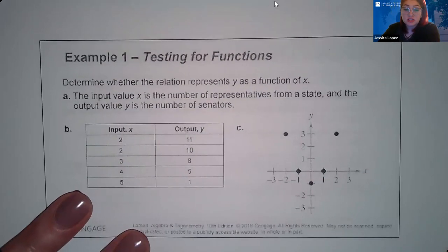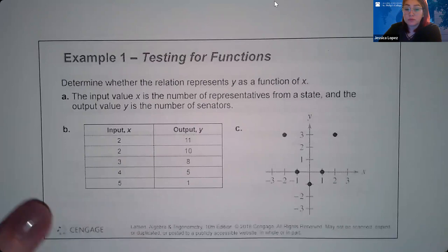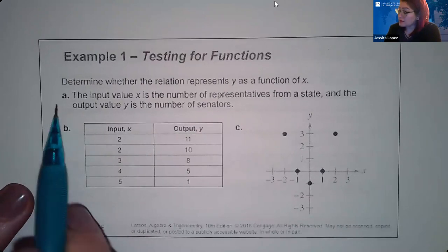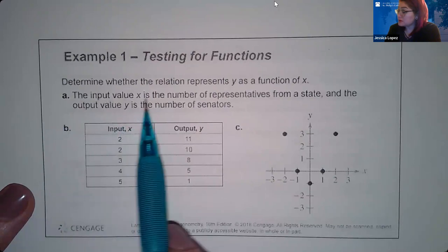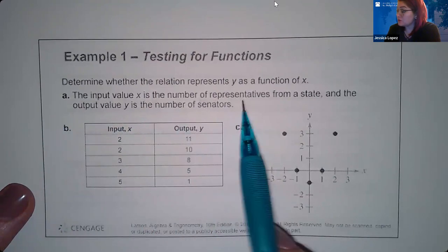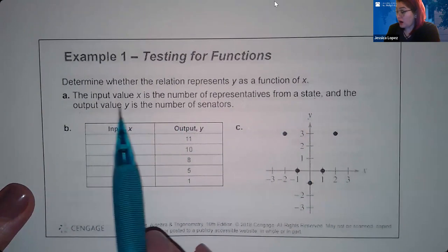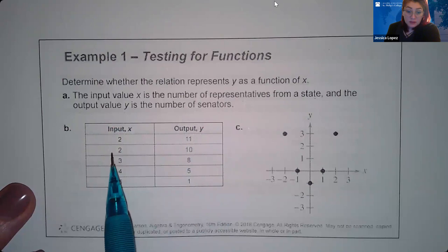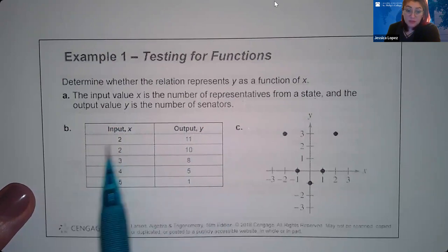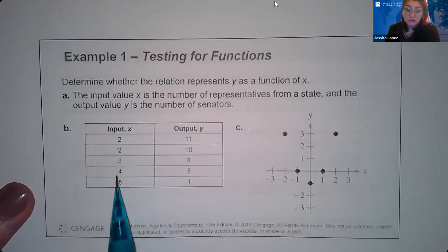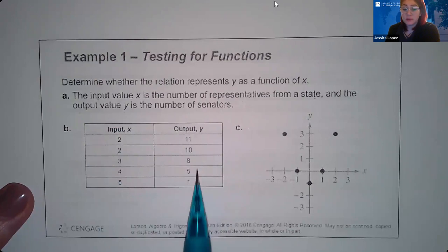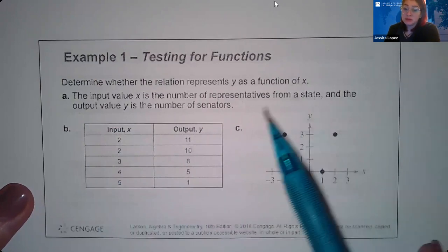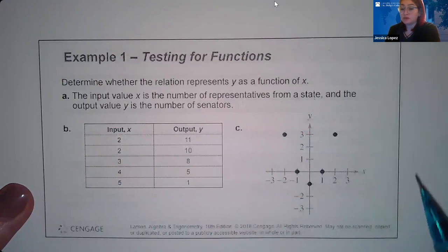Here are three examples: determine whether the relation represents y as a function of x. Part A gives a verbal description where the input value x is the number of representatives from a state, and the output value y is the number of senators. Part B uses a table of input and output values. Part C describes the inputs and outputs using a graph.